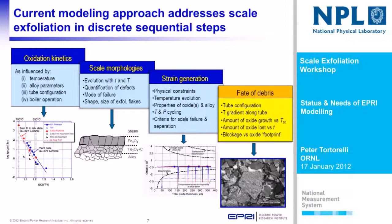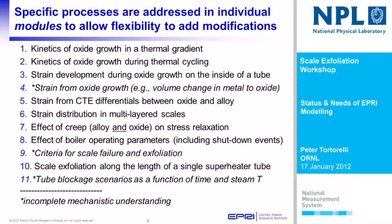The blockage model takes into account the tube configuration, gradients along the tube, the amount of oxide grown, and the amount of oxide lost, then looks at blockage as a function of the footprint of the deposit. Each of these specific processes is addressed in individual modules in the model to allow flexibility and to add modifications as we go. The greatest uncertainty and the greatest need for better mechanistic understanding relates to the strain from oxide growth, the criteria for scale failure and exfoliation, and the tube blockage scenarios as a function of time, steam temperature, and deposit footprint.